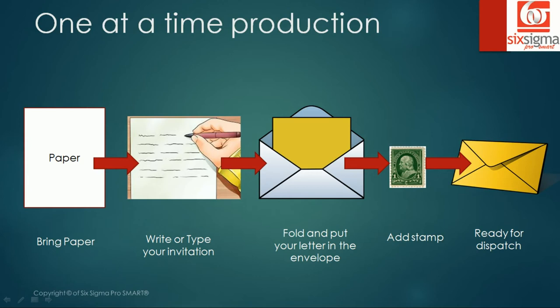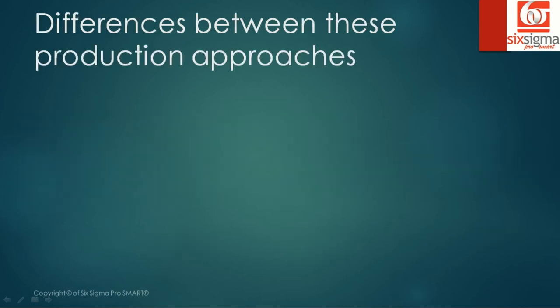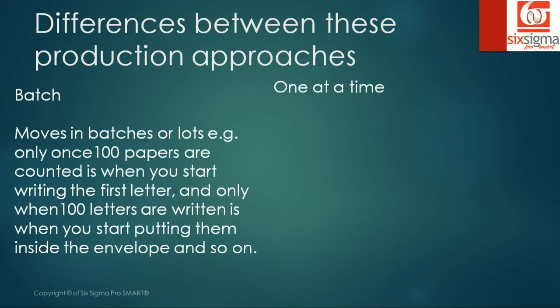Now let's look at one-at-a-time production. You bring one piece of paper, pass it to the next person who starts writing or typing the message, the third person starts putting it in an envelope, the fourth person puts a stamp, and the fifth person makes it ready for dispatch. In a batch production system, the product moves in batches or lots — for example, only once 100 papers are counted do you start writing the first letter, and only when 100 letters are written do you start putting them inside the envelope, and so on.